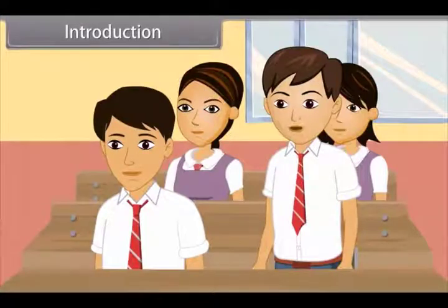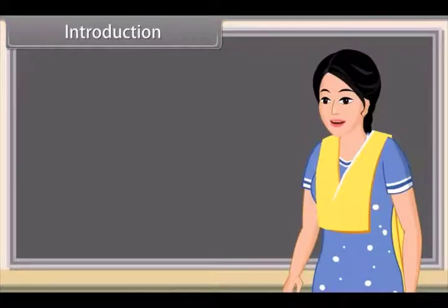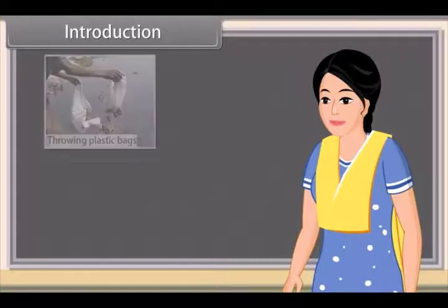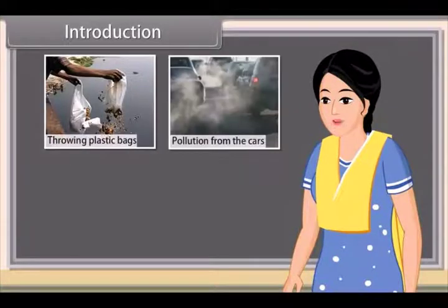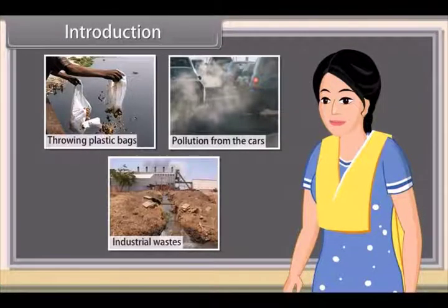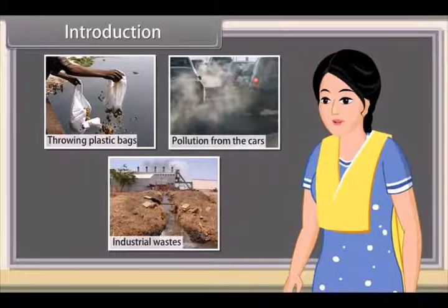And now our activities have made it polluted and it appears dirty. How are we making this river polluted? Many of our activities destroy the clean state of rivers such as throwing plastic bags, pollution from the cars, dumping of industrial wastes. Let us explore them in detail and their effects on our environment.